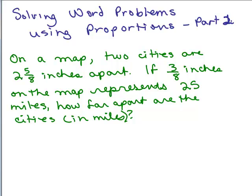All right, this is part 2 of Solving Word Problems Using Proportions. So here's an example. On a map, two cities are 2 and 5 eighths inches apart. If 3 eighths inches on the map represents 25 miles, how far apart are the cities in miles?